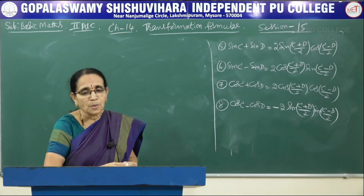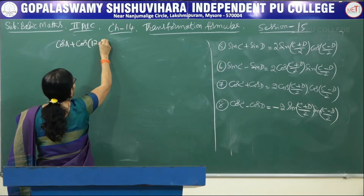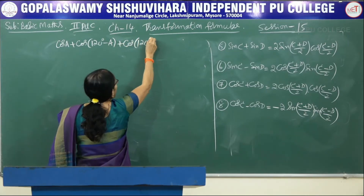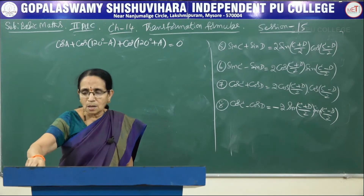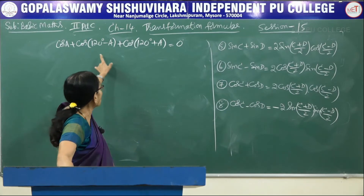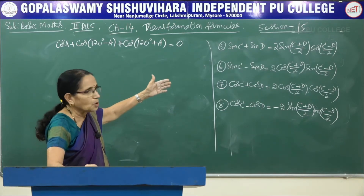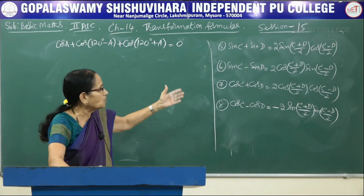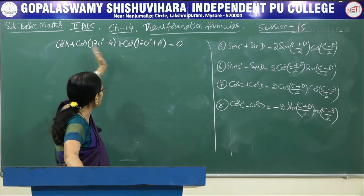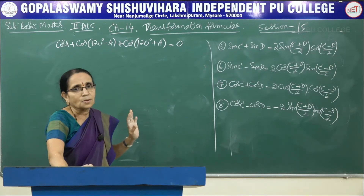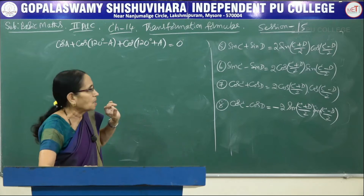The instruction is: prove the following. The first problem is cos A + cos(120 - A) + cos(120 + A) = 0. This problem can be solved using the compound angle formula for cos(A-B) and cos(A+B), but using the transformation formula it would be easier. There are three terms here — any two you can start with. The right hand side is 0, which tells us all the terms on the left hand side should get cancelled.